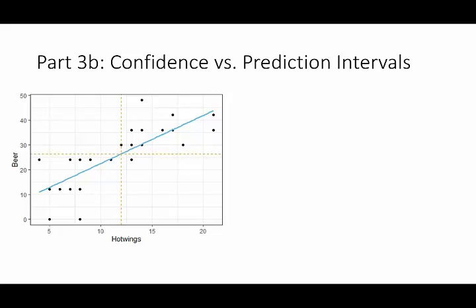Part 3b is going to focus on the idea of confidence versus prediction intervals. The two applications to keep in mind as we go through the calculations over the next few slides are hot wings versus beer and baseball, which I'll show you a picture of in a moment.